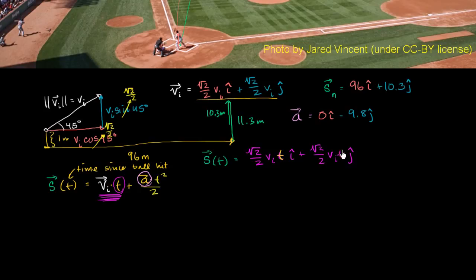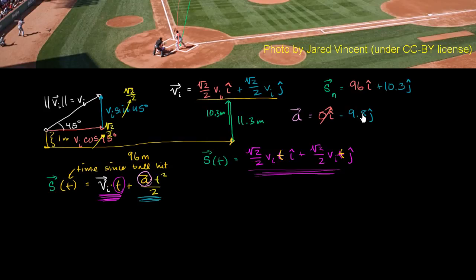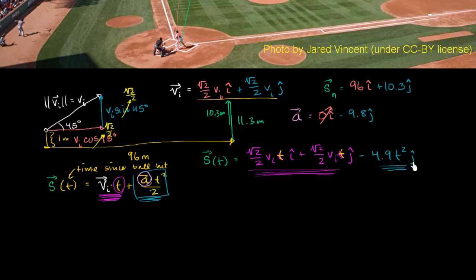The t is distributed onto both terms of the initial velocity vector. For the acceleration term, we're scaling by t squared over 2. There's no i component, so we only have the j term. Multiplying negative 9.8 by t squared over 2 gives us negative 4.9 t squared in the j direction.